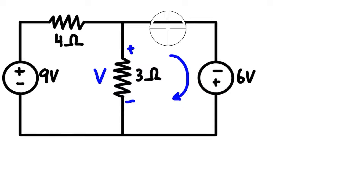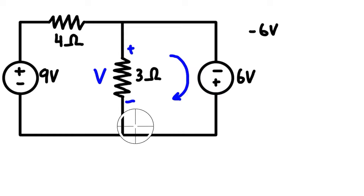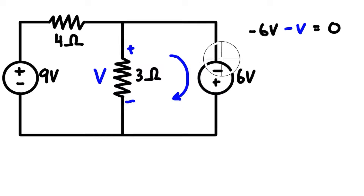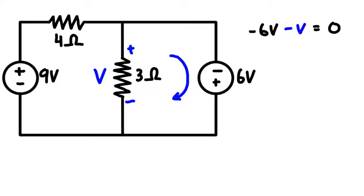We'll go around the loop and enter the negative terminal of the six-volt battery, so we have negative six volts, and then we have negative V. So negative six minus V equals zero, because we only have two elements in this loop. Starting here, we go through one element, through another, and we're back to the starting point. Rearranging, we get negative V equals six volts, or V equals negative six volts.